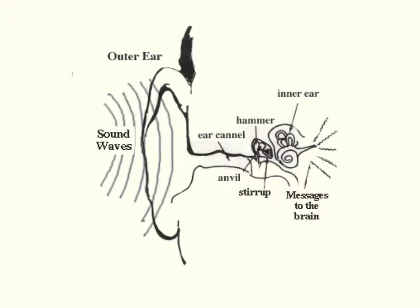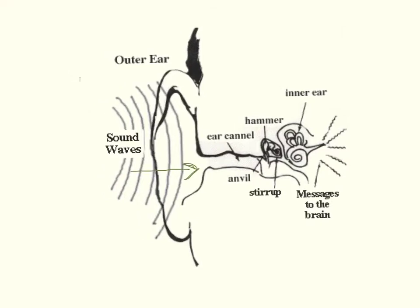Sound waves go into the outer ear, which is the ears on the side of your head. The waves then go into the ear canal and hit the eardrum.